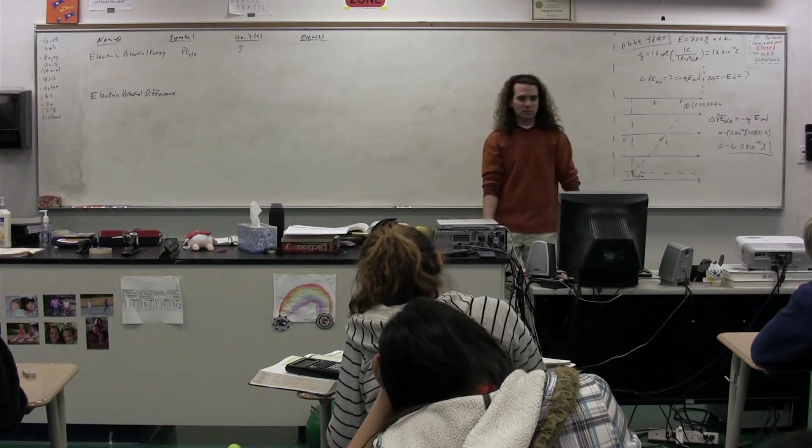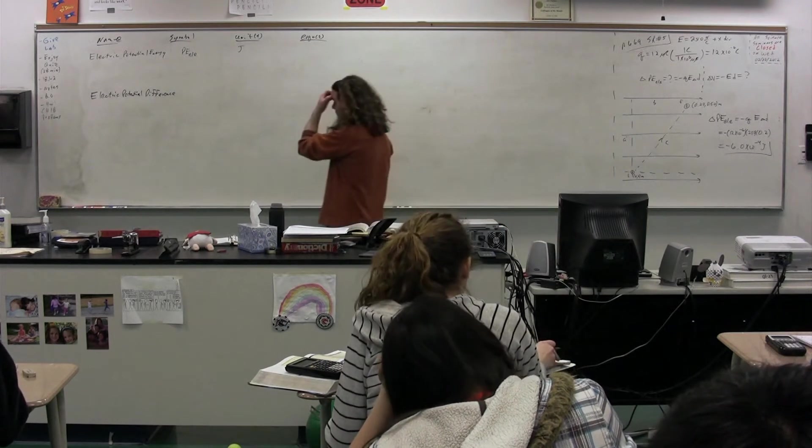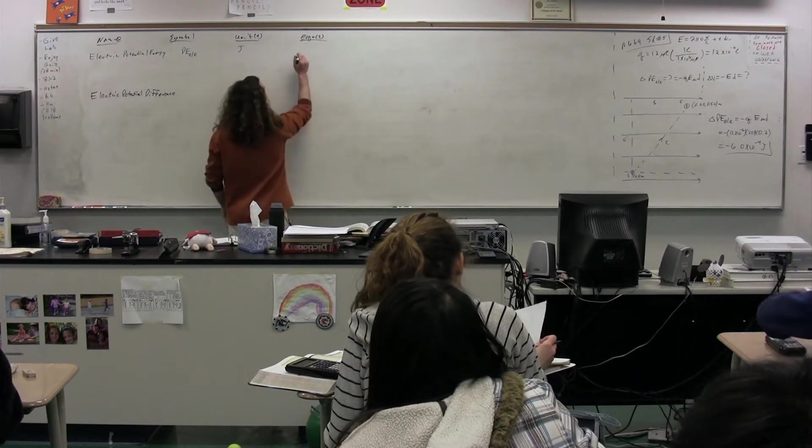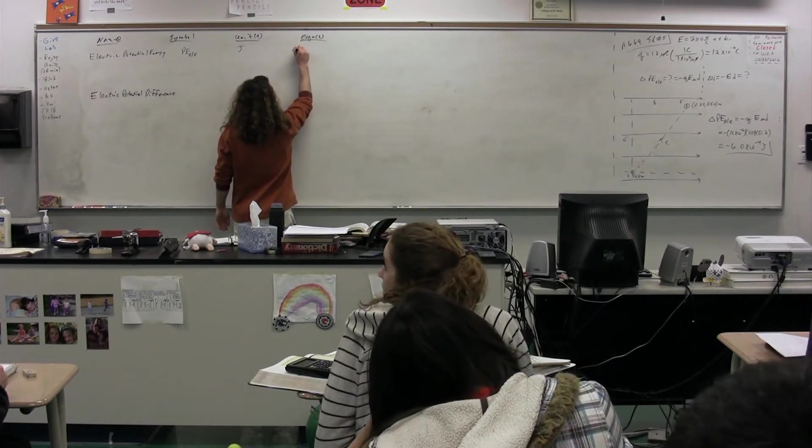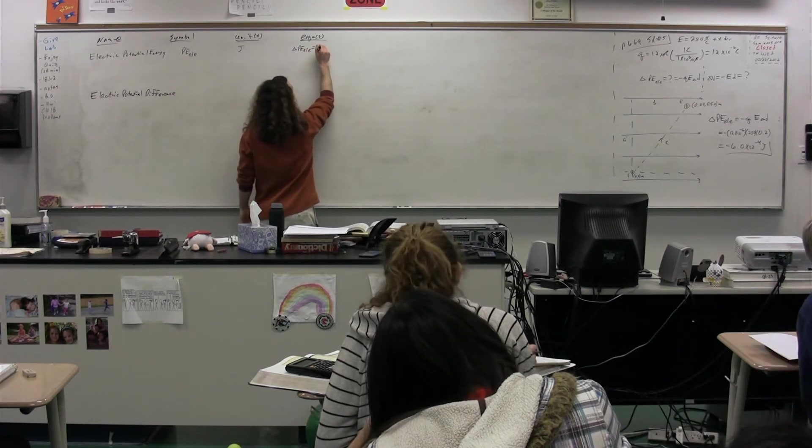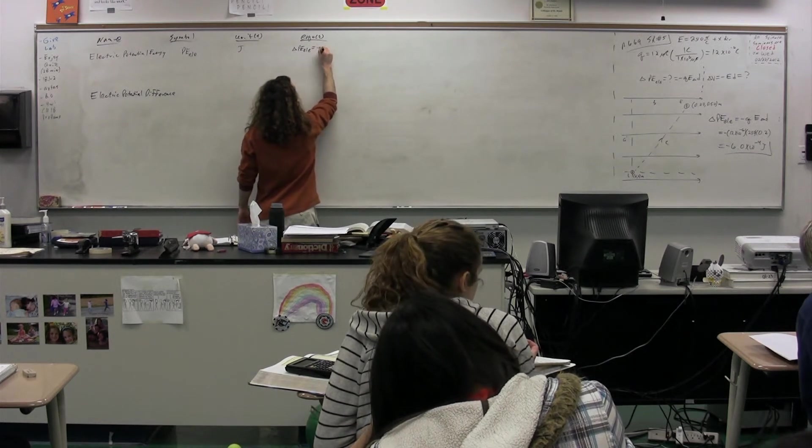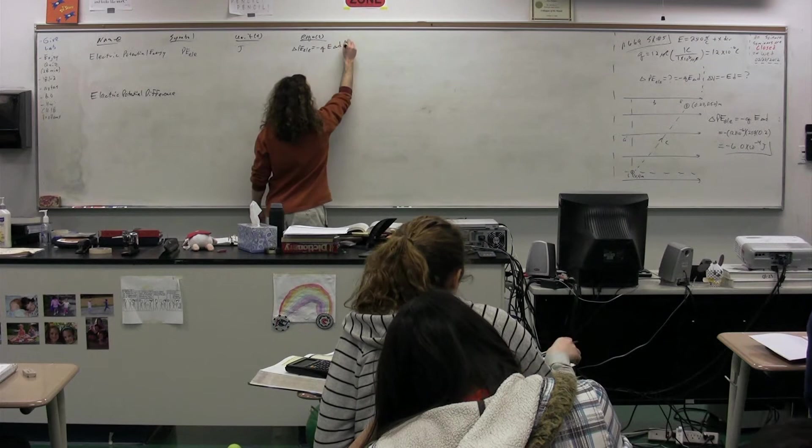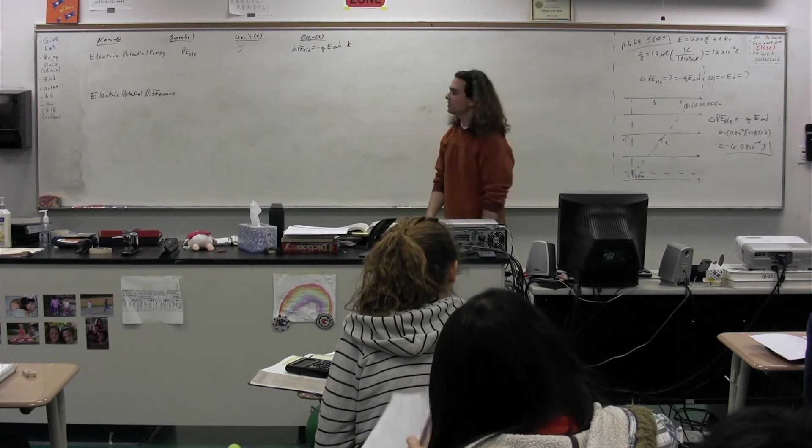We have two equations for electric potential energy. Please give me one of them, Lindsay. One of them is the change in potential electric energy equals Q E delta D. That's one of our two equations. The other equation we have for electric potential energy, Emily.